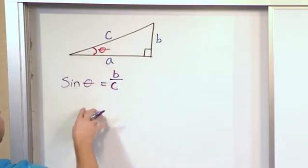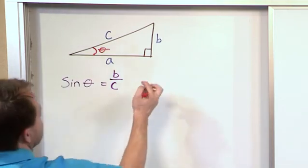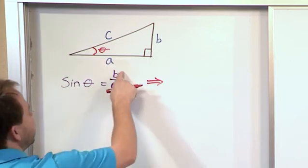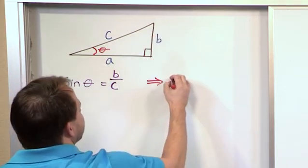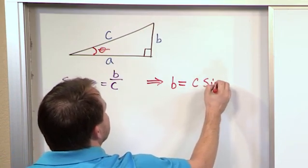And because we have defined it this way, I can rewrite this if I want to, and you'll be doing this later as well. You can say that side b, this side right here, is equal to the hypotenuse times the sine of the angle.